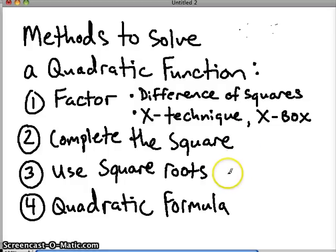Thirdly, you can use square roots. If we have a quadratic like this, if we want to undo that square, we use square roots. I'll show you an example of where that would be appropriate. Last but not least, we've got the quadratic formula. That can be used at any time. If you don't know any of these other methods, just use the quadratic formula. The problem is that sometimes it takes a lot longer.